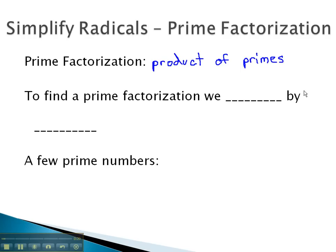The way we find a prime factorization is we start dividing by prime numbers. To divide by prime numbers, it'll be useful to know a few prime numbers that are divisible by only one and itself.